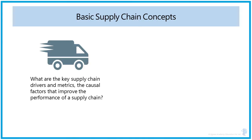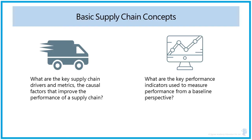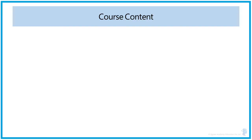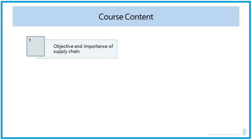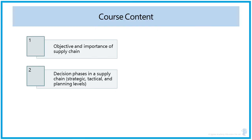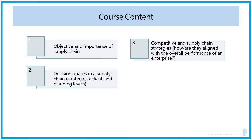We are going to look at the topic of supply chain drivers and metrics, which involves identifying the causal factors that improve supply chain performance and the key performance indicators used to measure performance from a baseline perspective. The module covers: first, the objective and importance of a supply chain and how it impacts profitability or increases supply chain surplus; second, decision phases in a supply chain at the strategic, tactical, and planning levels.